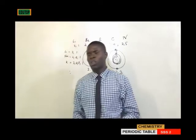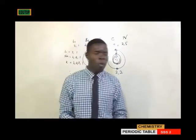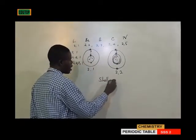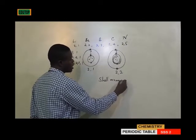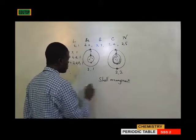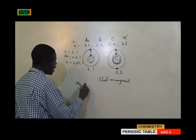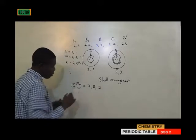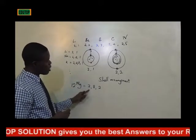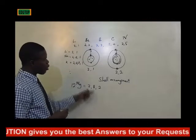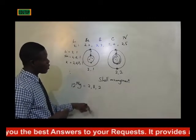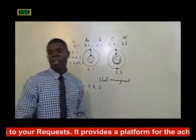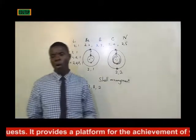Question 3: Write the electron configuration of magnesium using the Bohr model. The Bohr model refers to shell arrangements. Magnesium has an atomic number of 12, so its configuration is 2-8-2. The first shell (K shell) holds 2 electrons, the second shell holds 8 electrons, and the third shell holds 2 electrons.